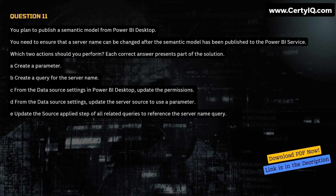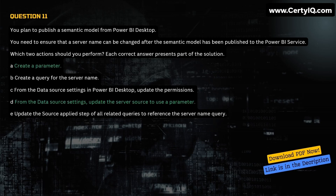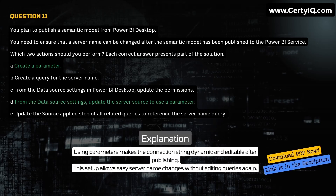Question 11. You plan to publish a semantic model from Power BI Desktop. You need to ensure that a server name can be changed after the semantic model has been published to the Power BI service. Which two actions should you perform? Each correct answer presents part of the solution. A. Create a parameter. B. Create a query for the server name. C. From the data source settings in Power BI Desktop, update the permissions. D. From the data source settings, update the server source to use a parameter. E. Update the source applied step of all related queries to reference the server name query. Correct answer is A and D. Explanation: Using parameters makes the connection string dynamic and editable after publishing. This setup allows easy server name changes without editing queries again.